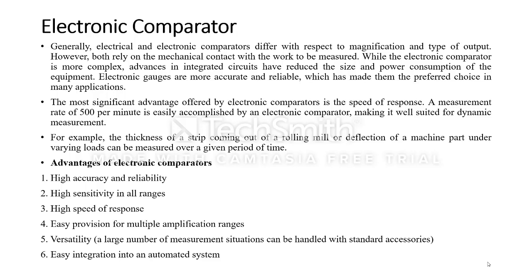These electronic comparators are mainly used where there is a higher requirement of accuracy and reliability, but they are not robust when compared with mechanical comparators. The main advantage of the electronic comparator is its higher response, quick response, and speed. We can compare jobs at around 500 per minute. For example, if you want to compare the thickness of a strip coming out of a rolling mill, it can easily do so.